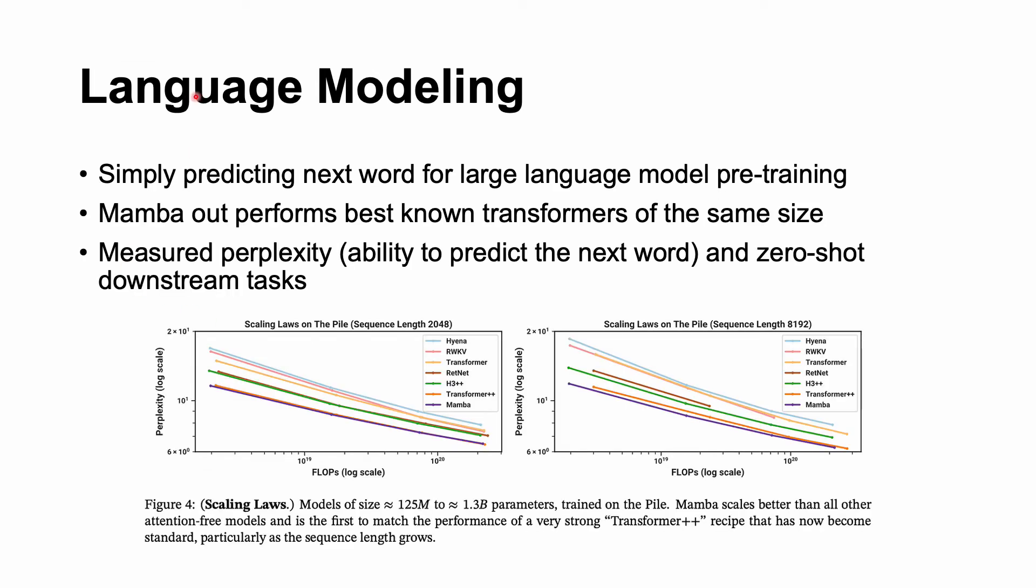The next evaluation they did was language modeling. Simply, they just predicted the next word for a large language model pre-training. Mamba also blows it out the water for best-known transformers of the same size. They measured it using perplexity. So it's the ability to predict the next word and also zero-shot downstream tasks. So you can see how well Mamba performed in terms of language modeling.